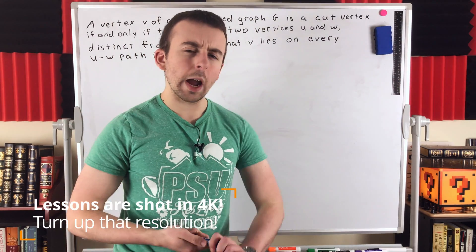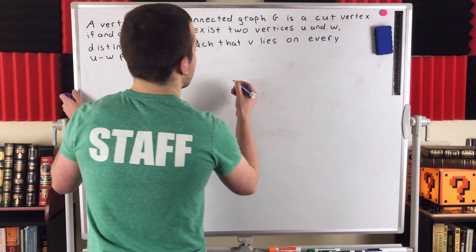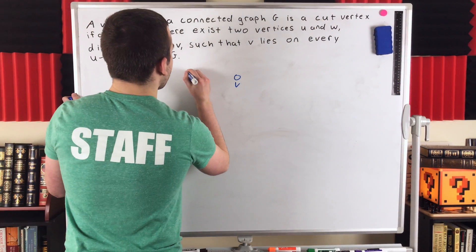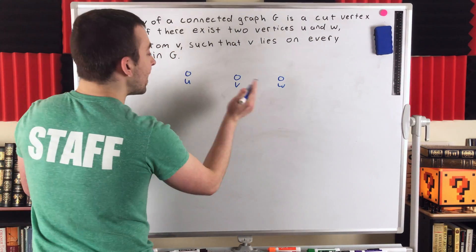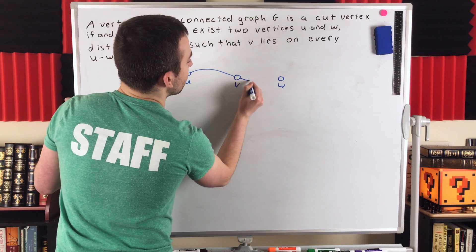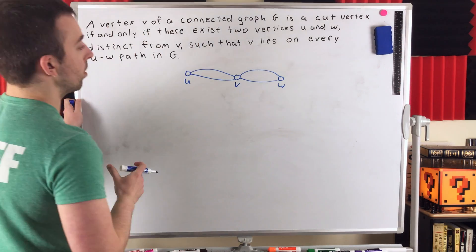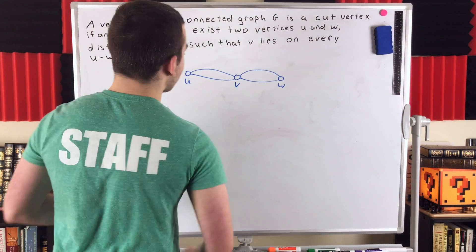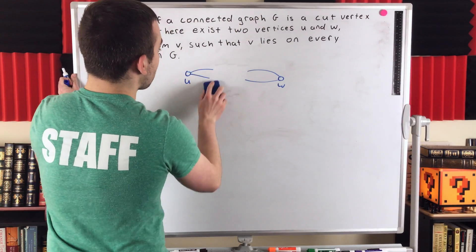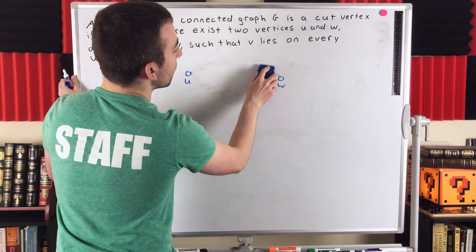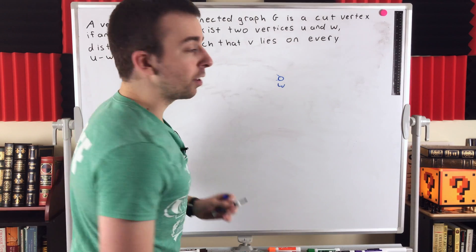This should seem like a pretty intuitive characterization of cut vertices, because a vertex is only going to be a cut vertex if there are two other vertices, we could call U and W, such that the only way to get from U to W is to go through V — to at some point pass through V. These are just supposed to represent paths, not edges. So what would happen in this situation is once we delete V from the graph, there will no longer be a way to get from U to W. So those vertices will be disconnected, thus the resulting graph will be disconnected, thus by definition V is a cut vertex.